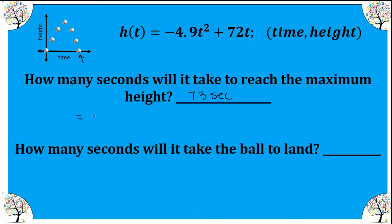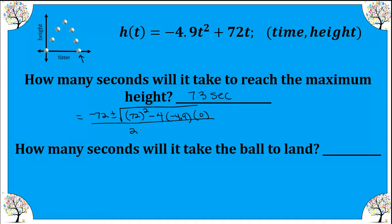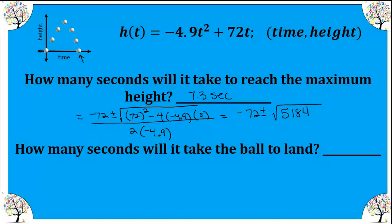Our formula is negative b plus or minus the square root of b squared minus 4ac, all over 2a. So we have negative 72 plus or minus the square root of 72 squared minus 4 times a times c, where c is zero, over 2 times a. When we square 72 we get 5184, and when we multiply the 4ac part we get zero, leaving us with the square root of 5184, which is just 72. So we have negative 72 plus or minus 72, over negative 9.8.